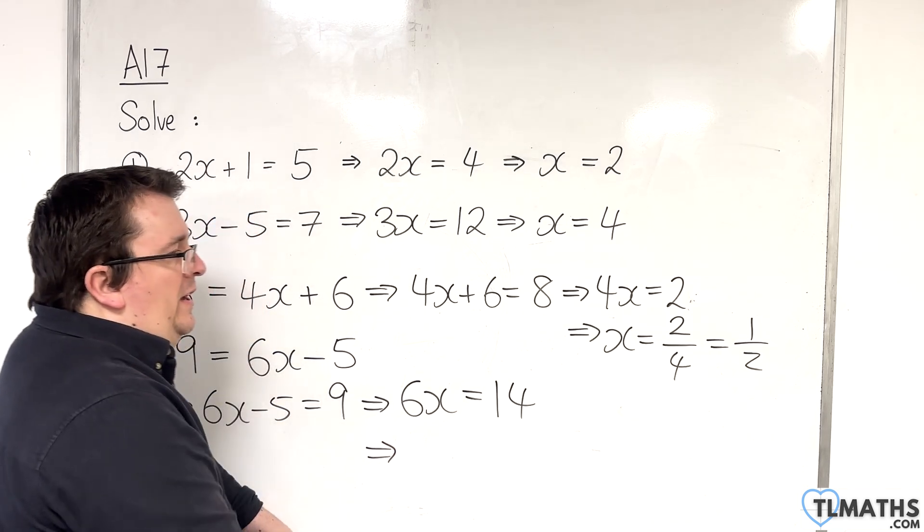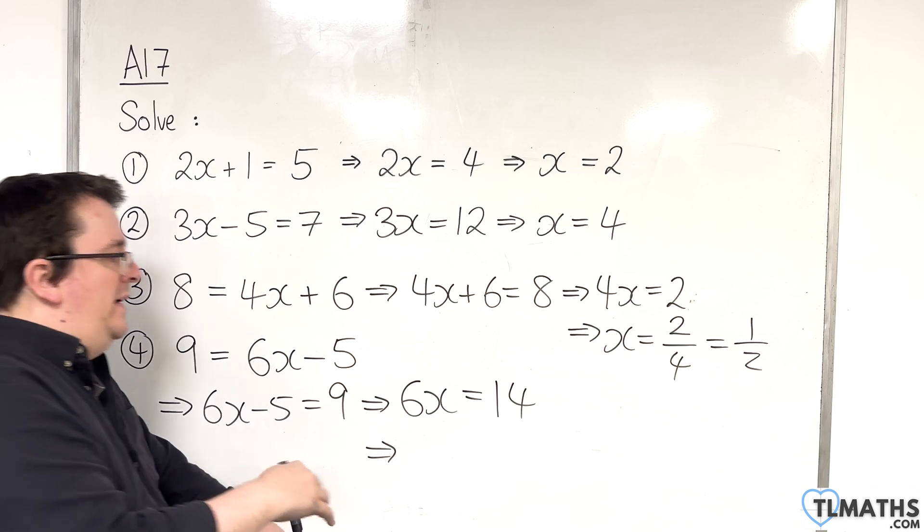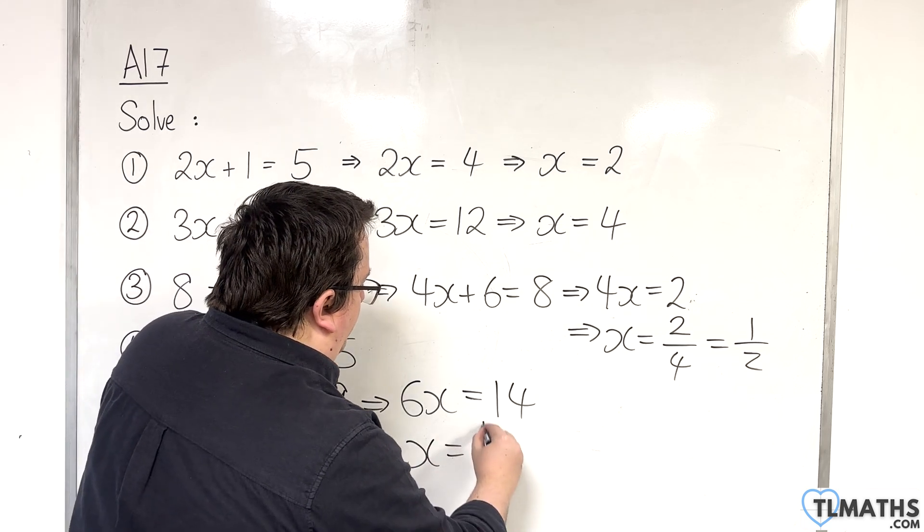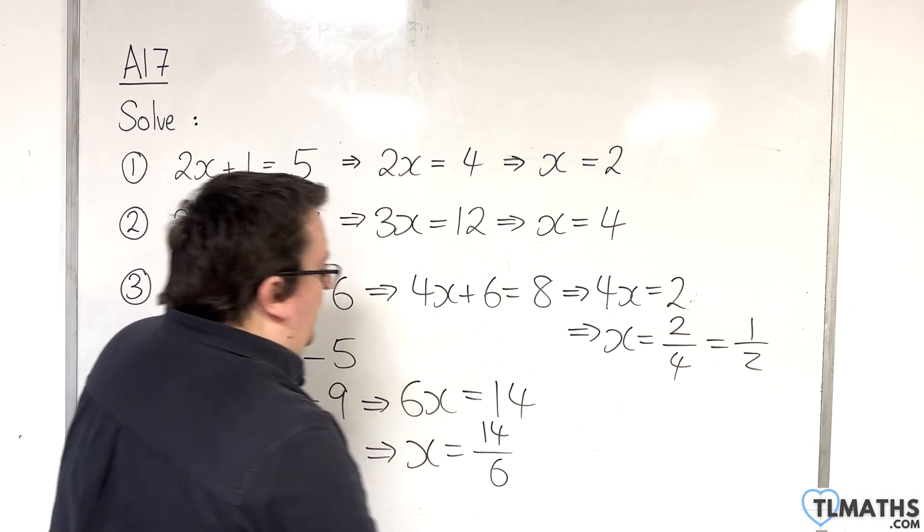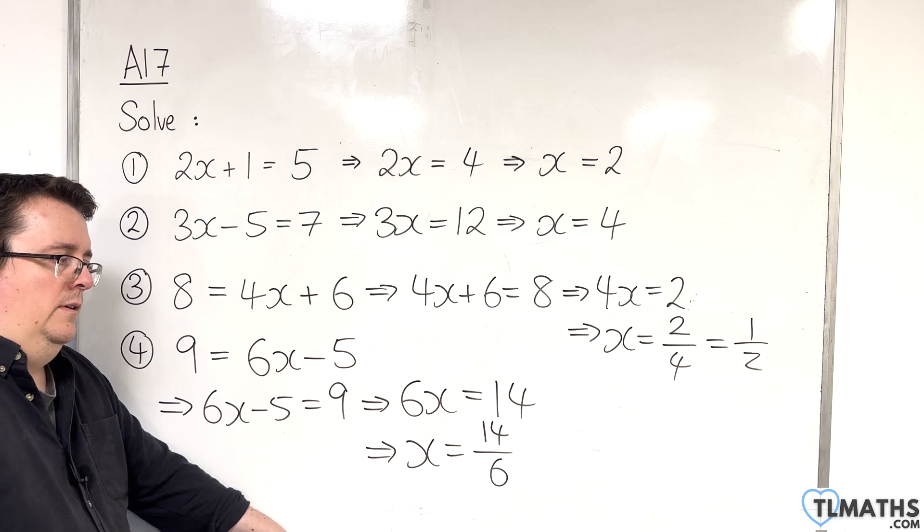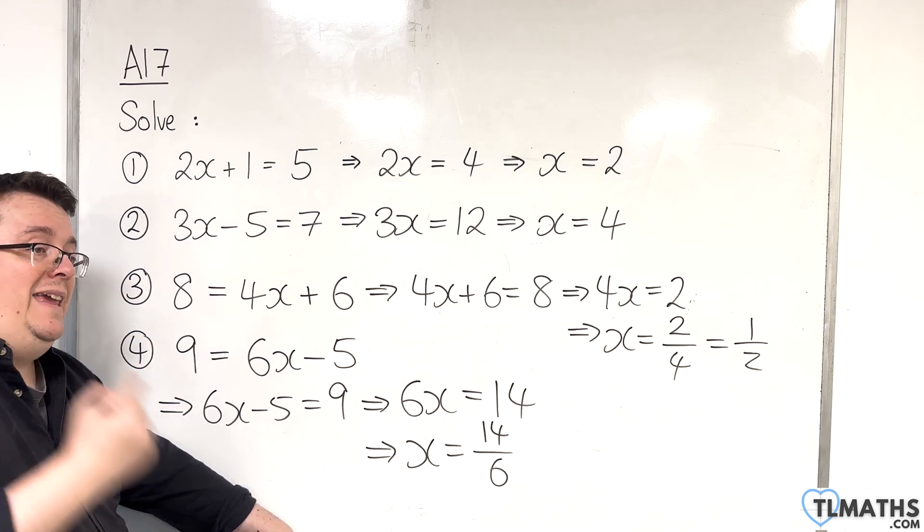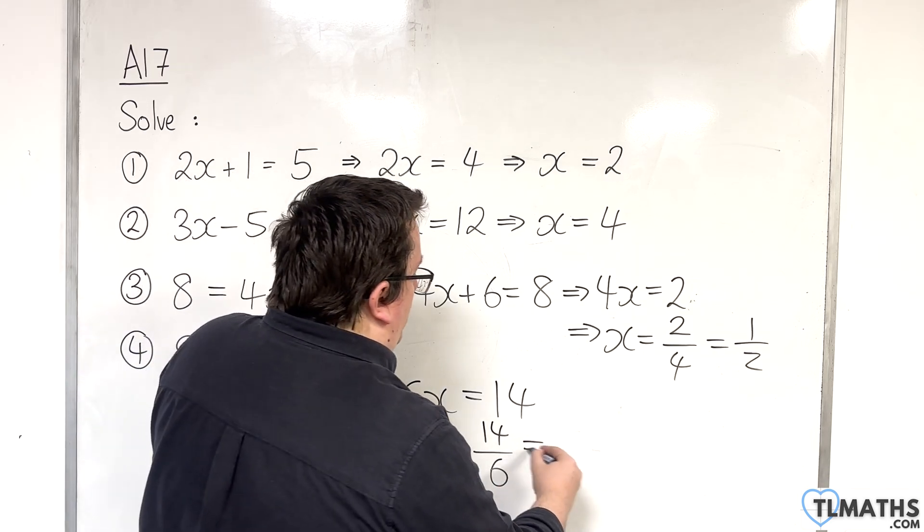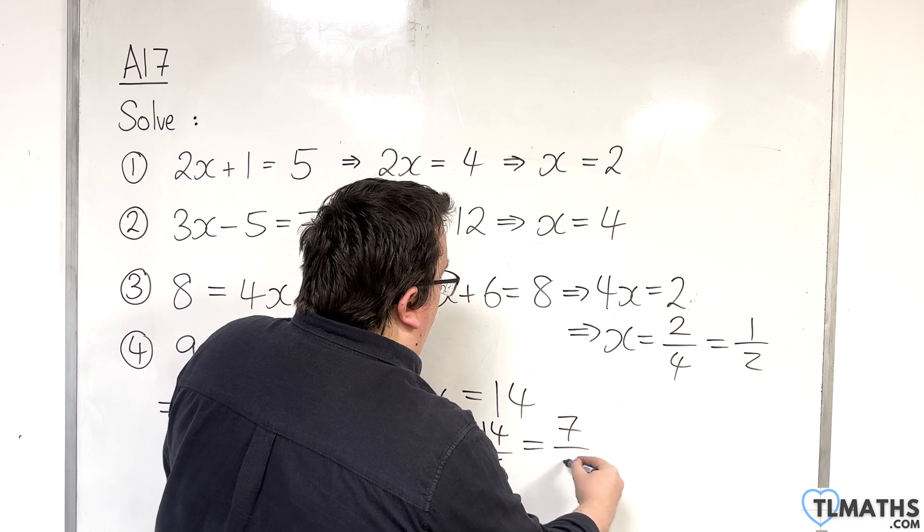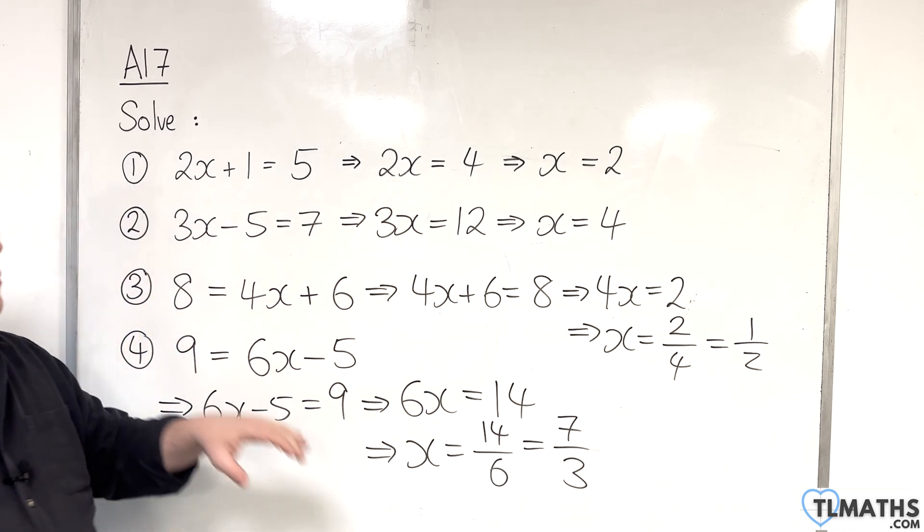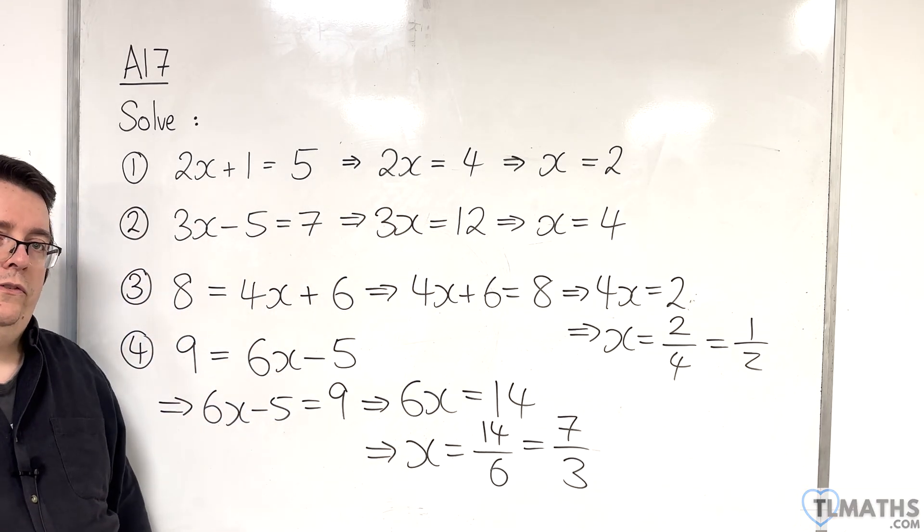6x equals 14. So, I'm multiplying by 6. So, I'm going to have to divide both sides by 6. x is going to be 14 over 6. Now, top and bottom of that fraction are even. So, I know I can divide top and bottom by 2. And that gets me 7 thirds. And so, the answer to number 4 is 7 thirds.